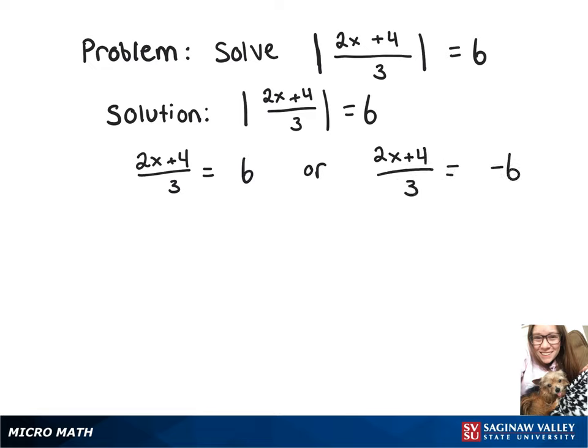Starting with the equation on the left, we're going to multiply both sides by 3. That's going to give us 2x plus 4 equals 18. Now we're going to subtract 4 from both sides, leaving us with 2x equals 14. Our last step is to divide by 2, giving us one answer of x equals 7.